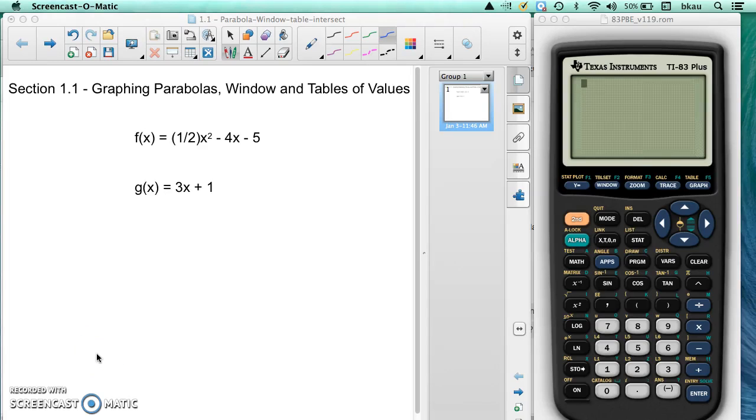Hello. In this video we're going to be working with the graphing calculator again. We're going to be graphing a parabola, looking at modifying the window, and looking at a table of values to see where two functions might intersect. All of those things are going to use the five keys up here on the top in graphing mode. We're using a TI-83 Plus in this example.